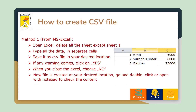There are two methods to create a CSV file. The first method is using Microsoft Excel. I open Excel and type the content — three rows and three columns: one, Amit, 6000; two, Suresh Kumar, 8000; three, Gabar, 75000. When saving, I save it with the extension .csv. Even though it is an Excel file, saving with the .csv extension automatically converts it to a CSV file.